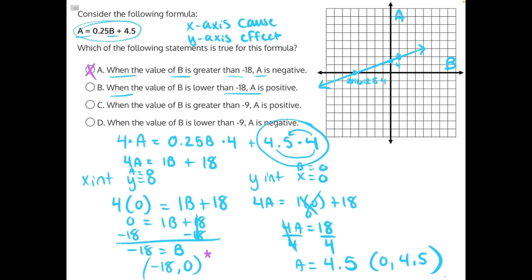B says when the value of B is lower than negative 18, so the other way, A is positive. That's not true, because everything less than or lower than negative 18 has negative A values, not positive ones.